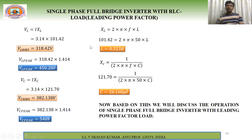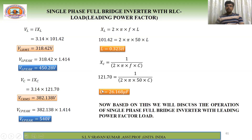Using XL = 2π·f·L: 101.42 = 2π × 50 × L → L = 0.323 H. Using XC = 1/(2π·f·C): 121.70 = 1/(2π × 50 × C) → C = 26.168 μF.